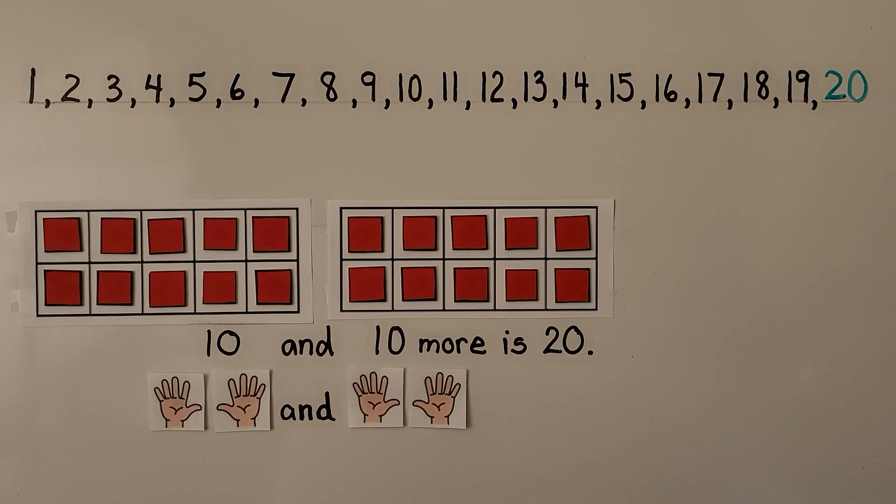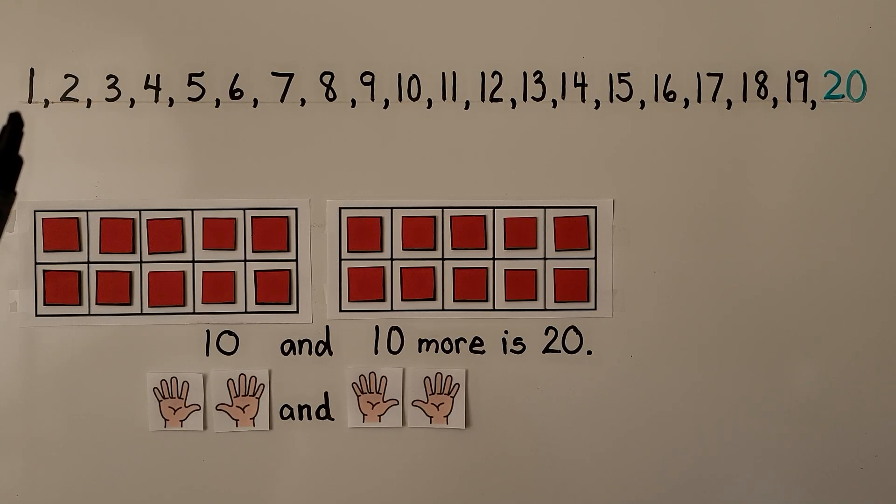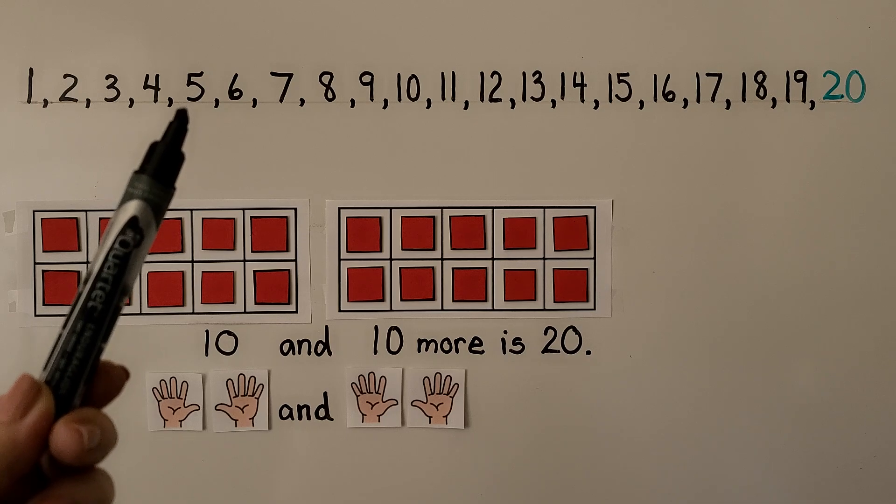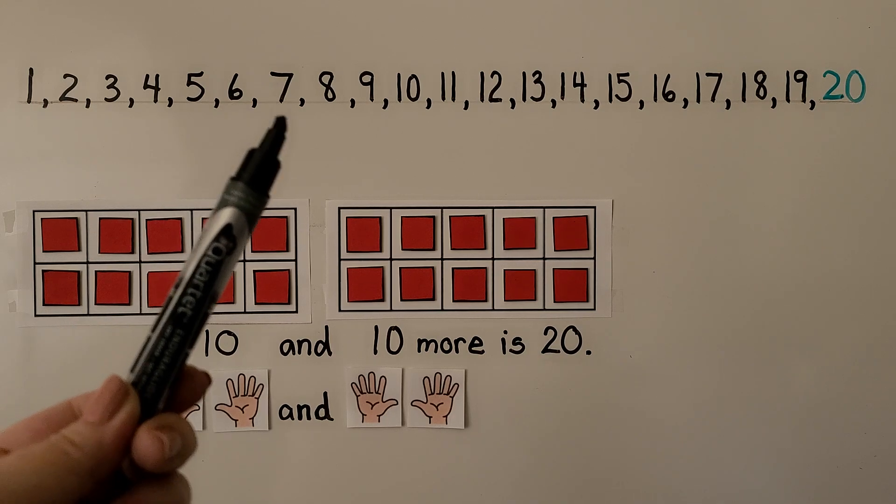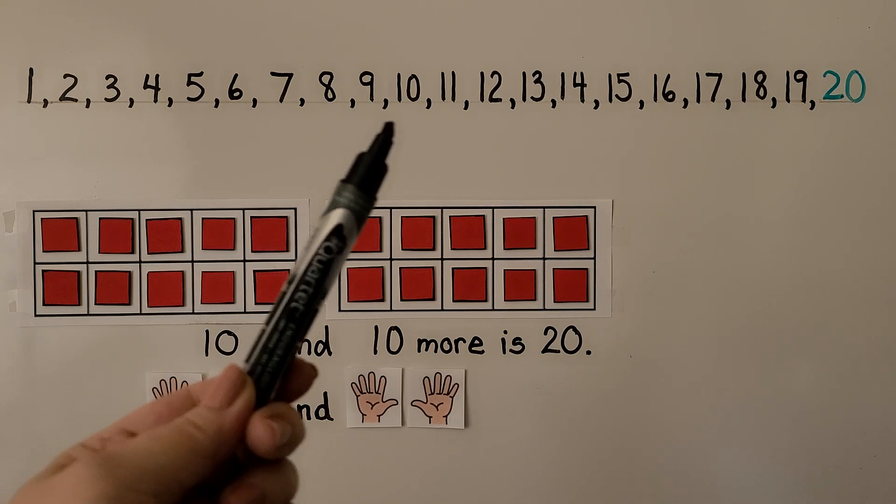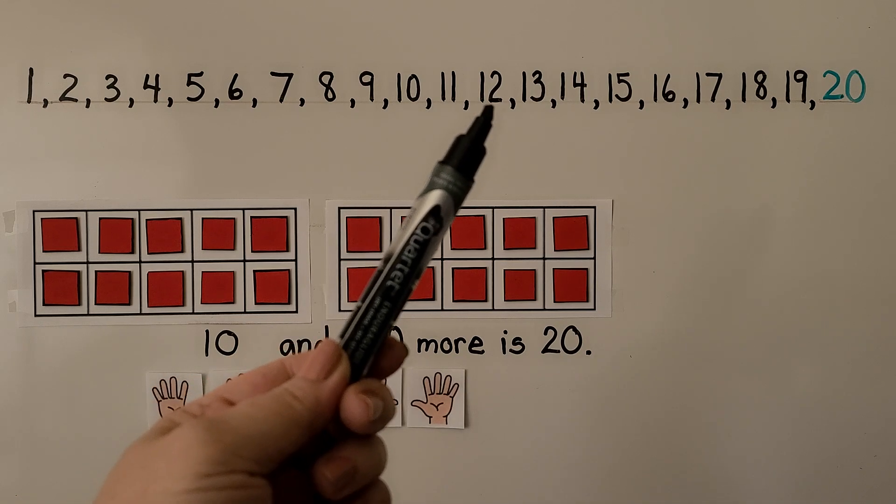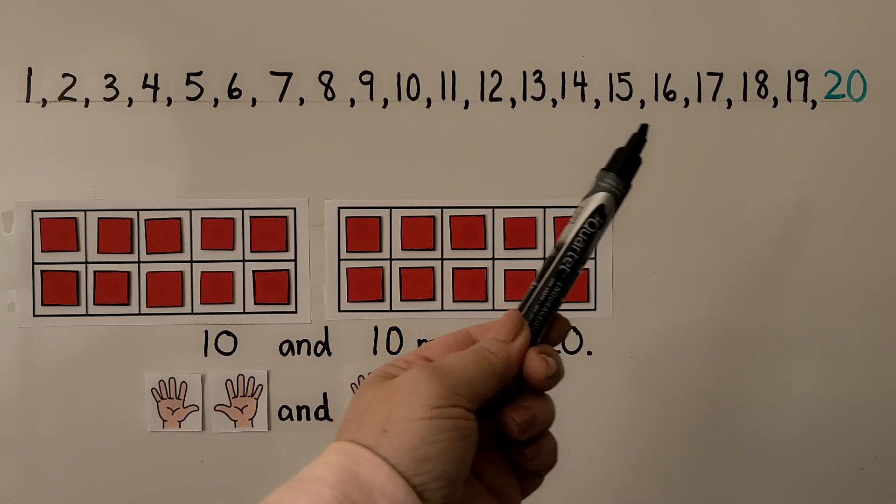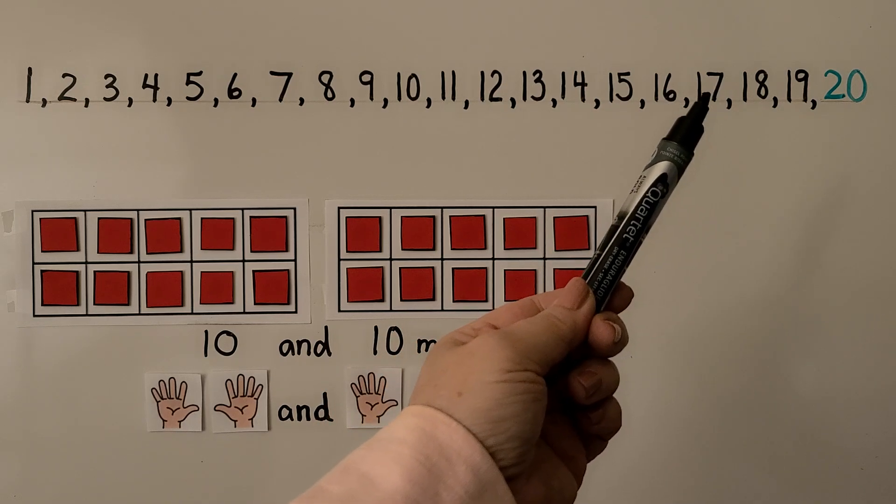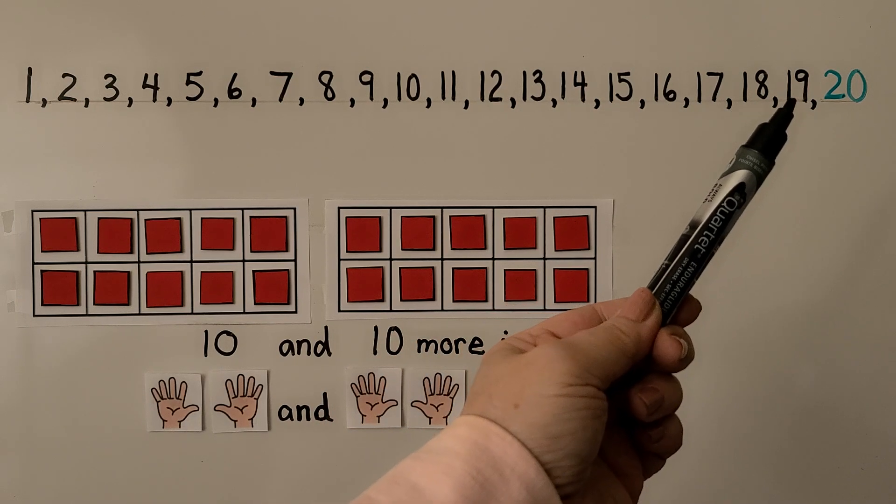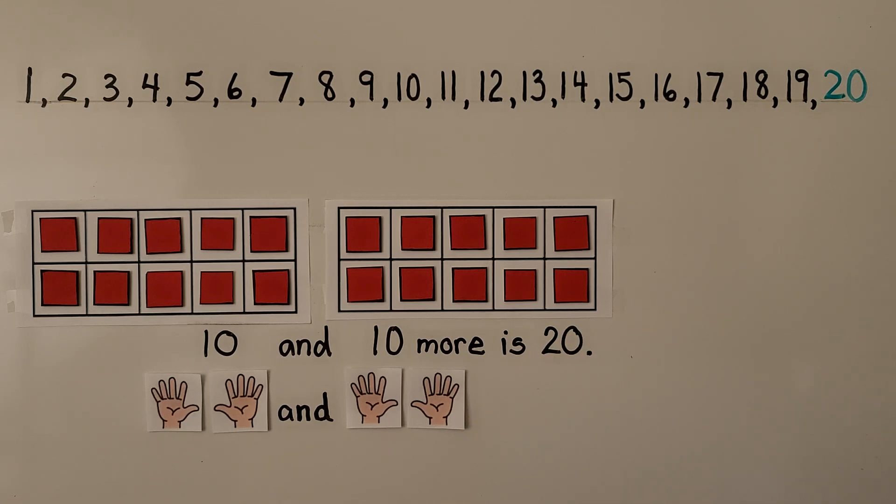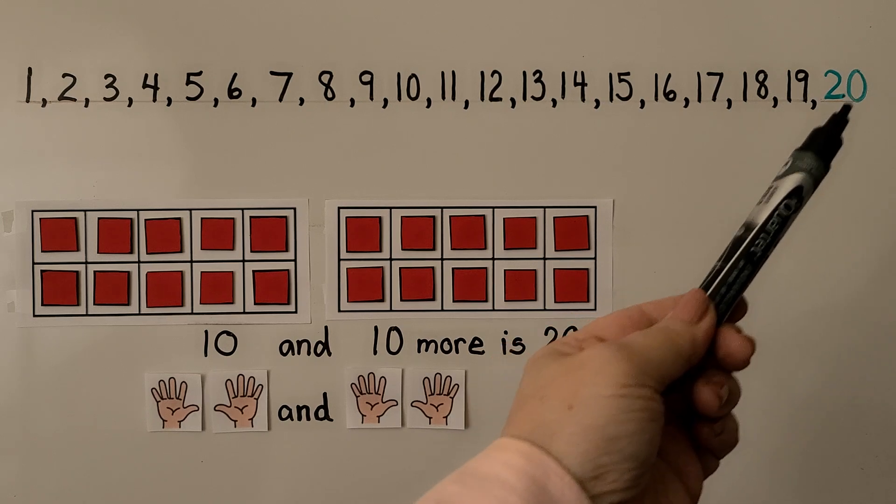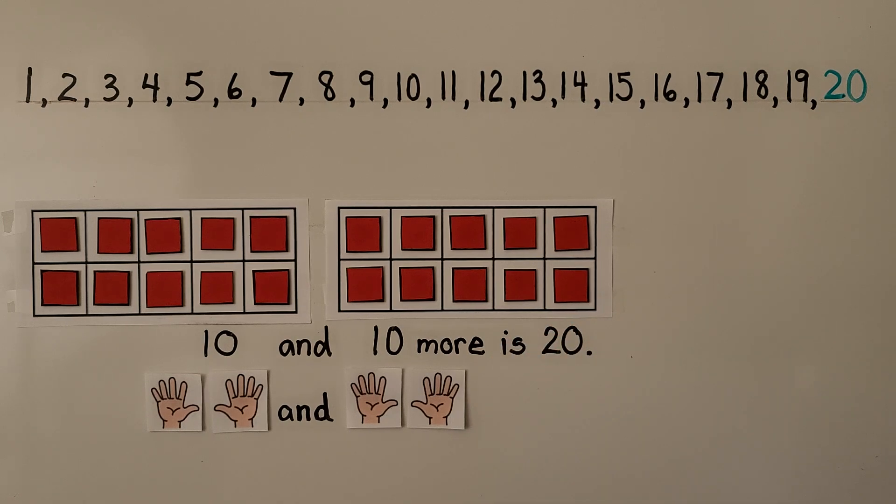You can count with me to 20 in counting order. 1, 2, 3, 4, 5, 6, 7, 8, 9, 10, 11, 12, 13, 14, 15, 16, 17, 18, 19, 20. 20 is the next number after 19 in counting order.